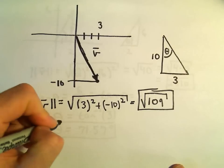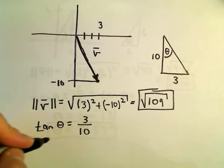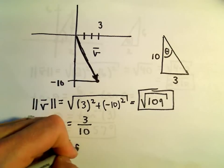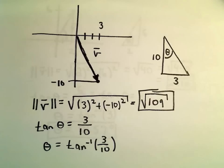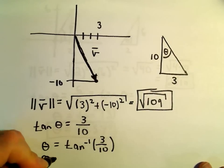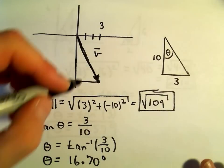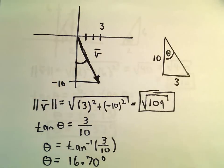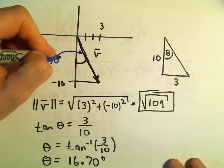So we'll simply do tangent of theta equals opposite over adjacent, so 3 over 10, which would tell us that theta is just going to equal arctangent. So 3 divided by 10, that's going to give us, well, 0.3. When we take arctangent of that, I'm getting that angle to be roughly equal to 16.70 degrees after rounding off. So really what we found is, again, we found this angle. So we found that this angle is 16.70 degrees.